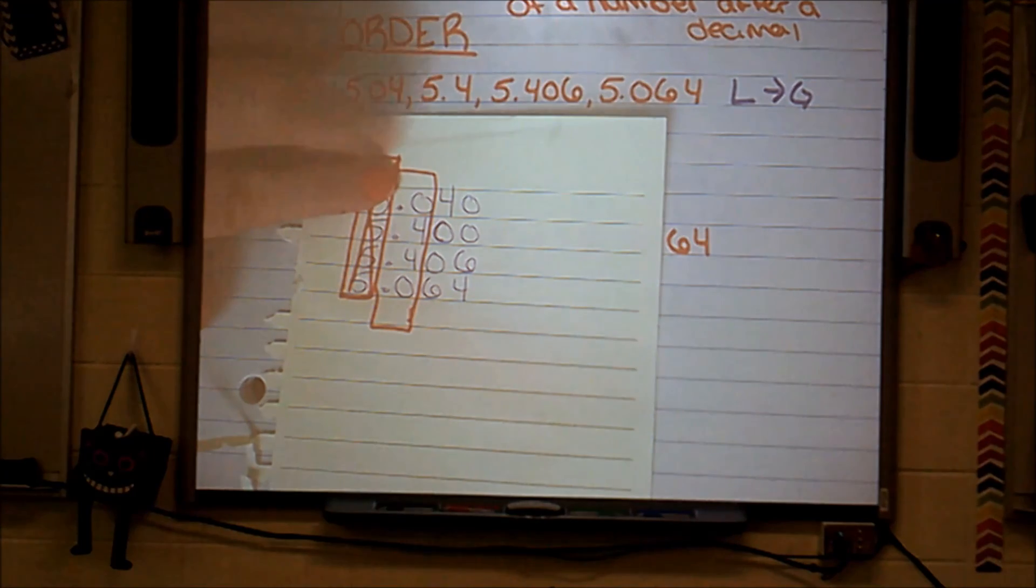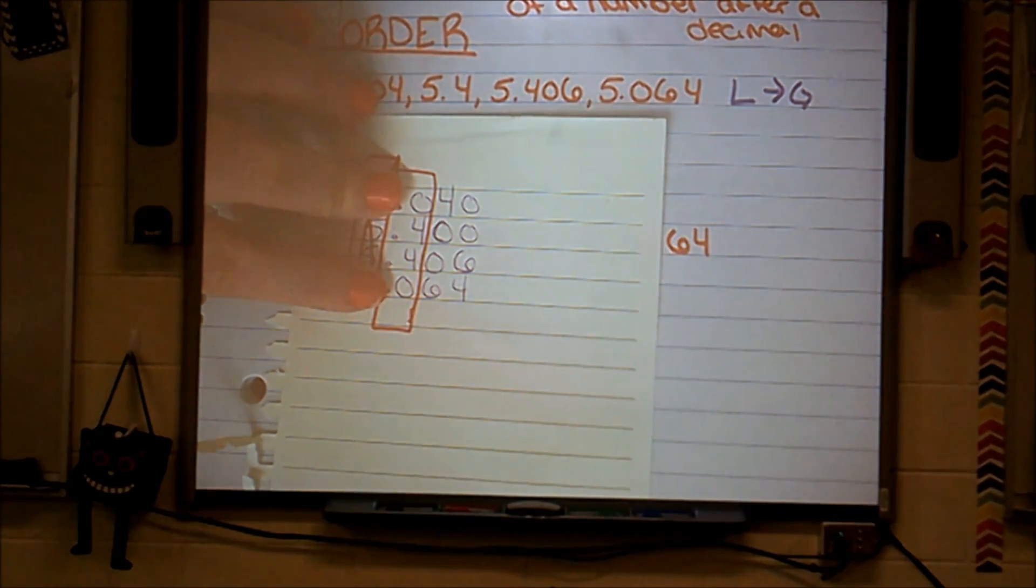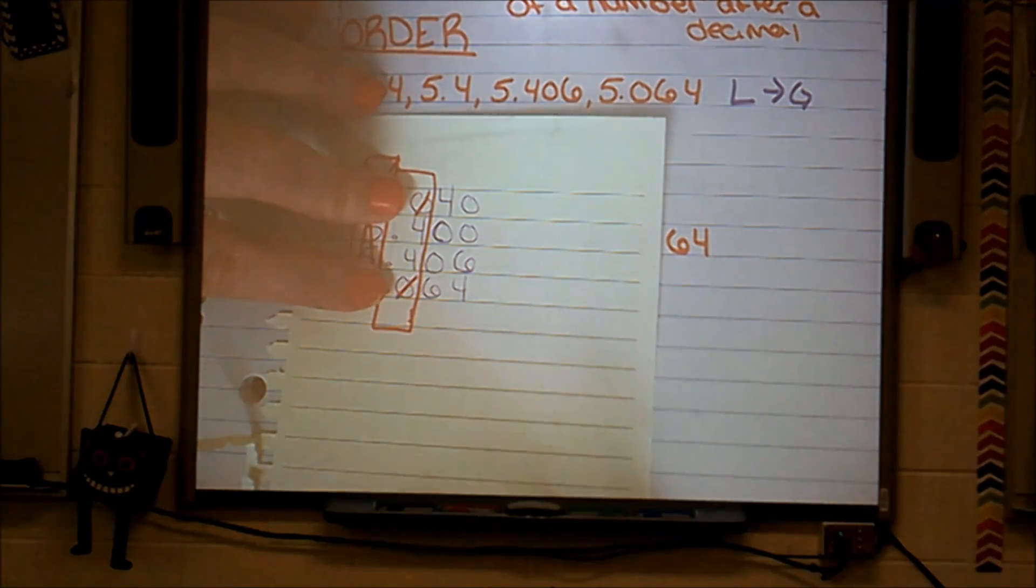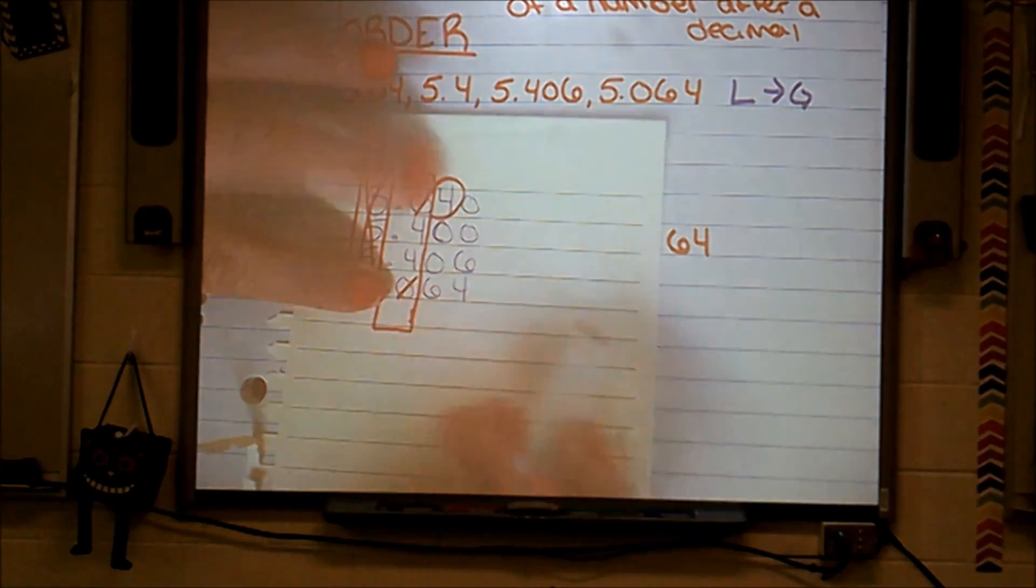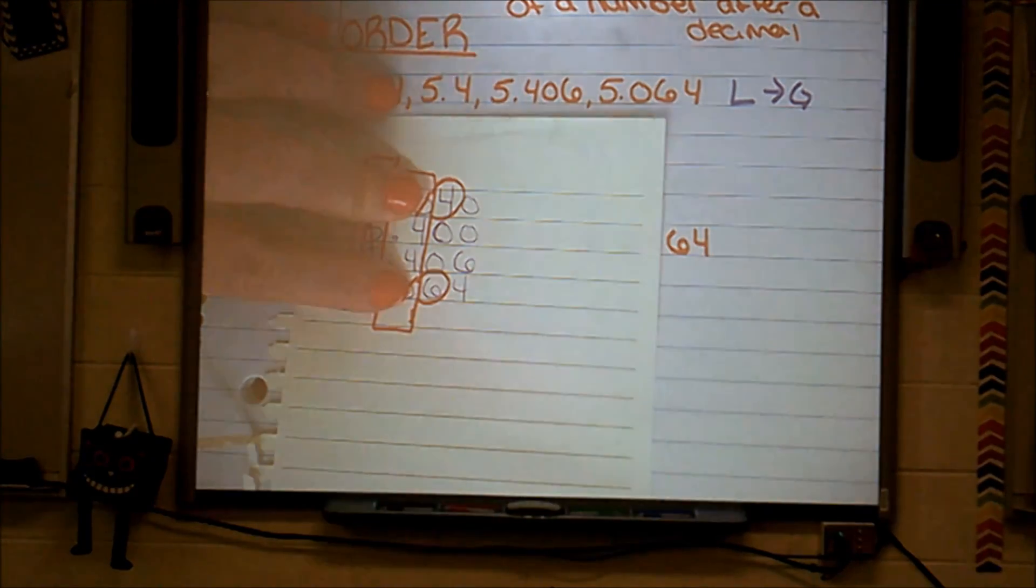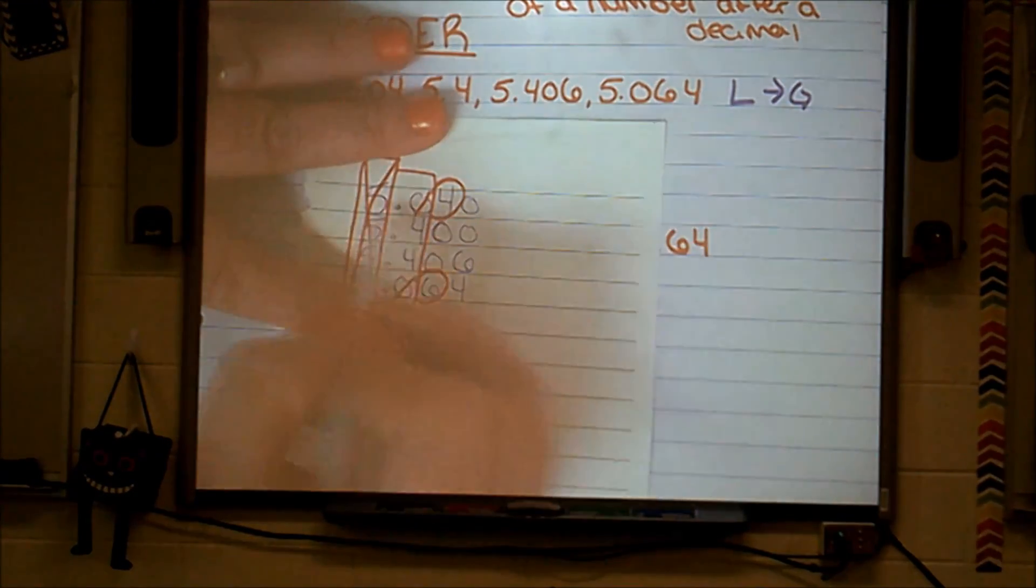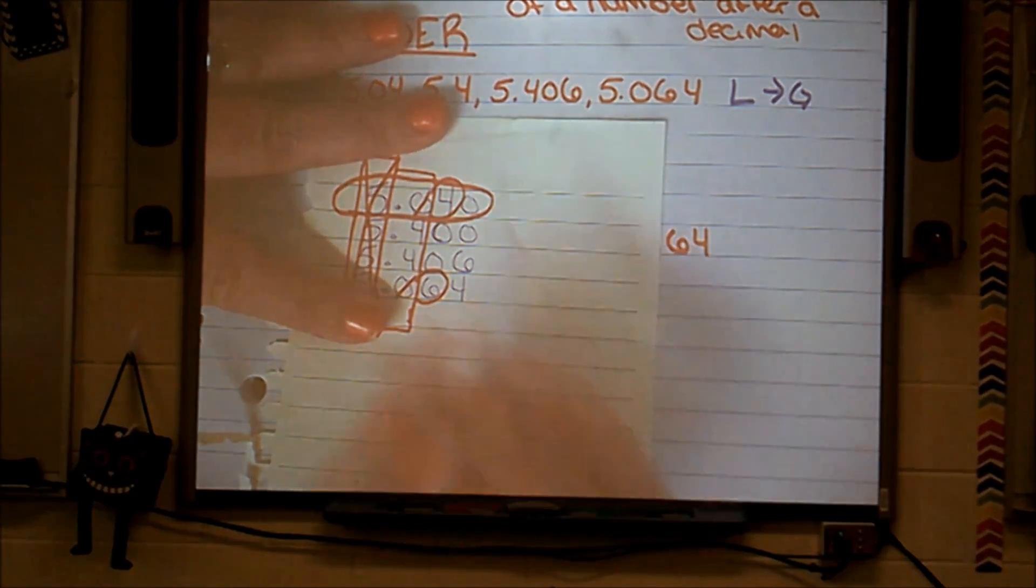I then go to my next place value, my tenths place. And I look for my teeniest tiniest number. Zero! It's much smaller than four or four. Oh, but look, I have another zero here. So I'm going to focus my attention on these two numbers and see which one is the smallest of those two numbers. So I go to my next place value of those two numbers. One has a four, one has a six. Which one is the teeny tiniest number? Four! My four is my teeny tiniest number.